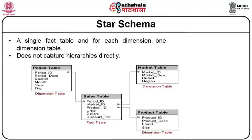Let us look at star schema as a type of schema. As we know from network concepts, a star network has a central hub and all machines to be connected go through this hub. Similarly, star schema has a centralized fact table and involves many dimension tables — a single fact table and for each dimension one dimension table — and does not capture hierarchies directly. The fact table considered here will be a sales table involving product ID, market ID, period ID, units, dollars, and discount packets.